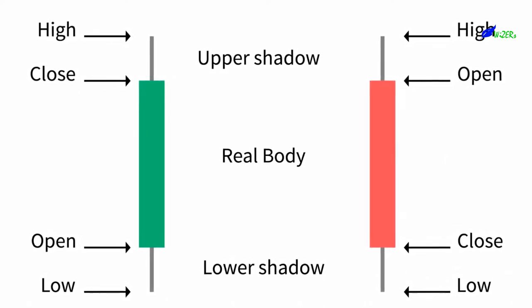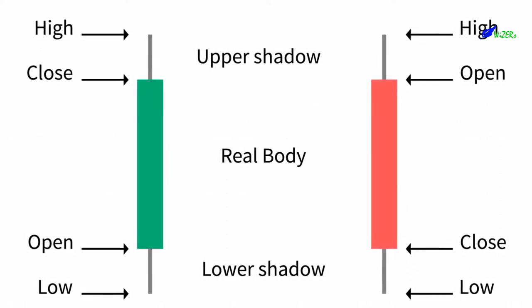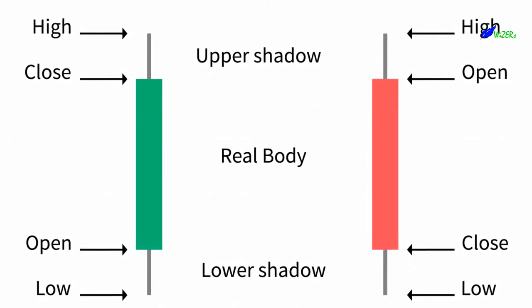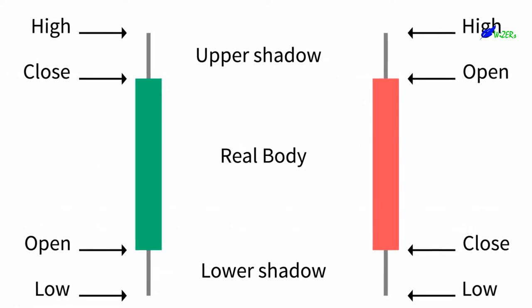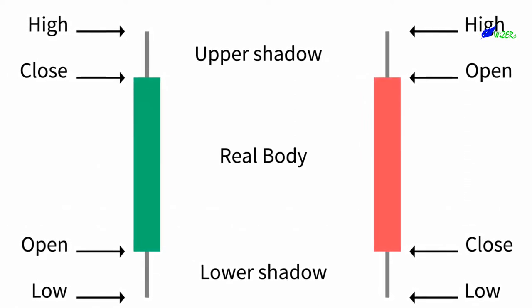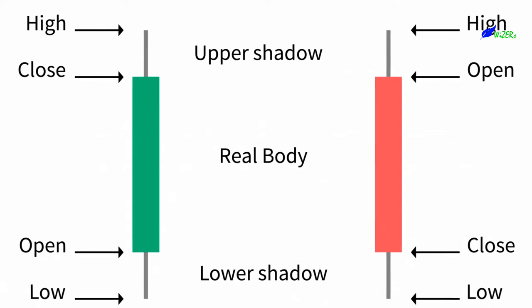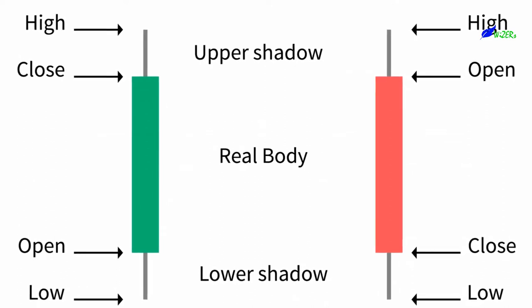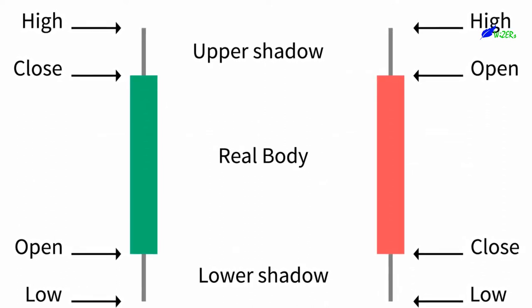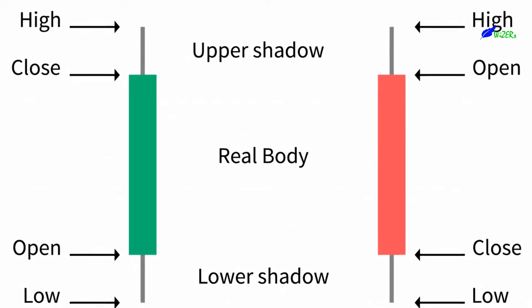The hollow or filled portion of the candlestick is called the body. The long thin lines above and below the body represent the high and low ranges and are called shadows. If the stock closes higher than its opening price, a hollow candlestick is drawn with the bottom of the body representing the opening price and the top of the body representing the closing price.